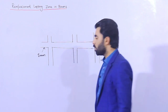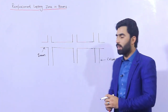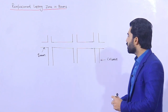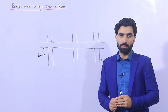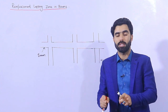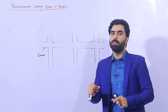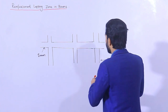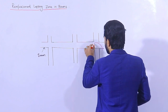So the question is: where is the best place to provide lapping length in the construction of a beam? Remember guys, we have positive bending moment and negative bending moment. In the case of positive bending moment and negative bending moment, we will find the best place to provide lapping length in the beam. As you know, we have positive bending moment and negative bending moment.